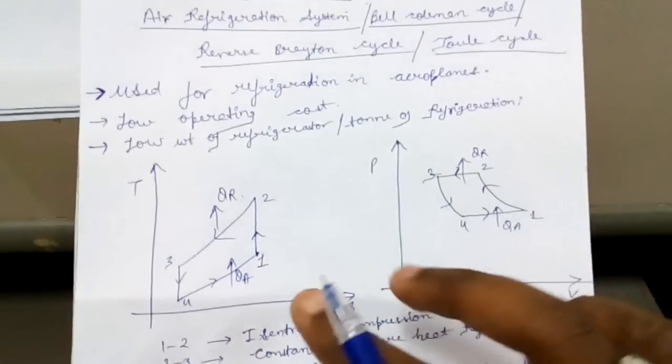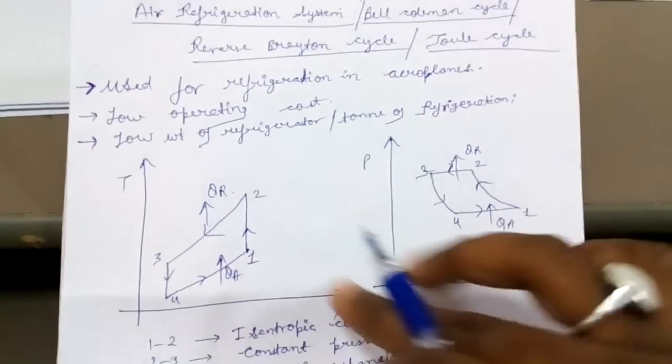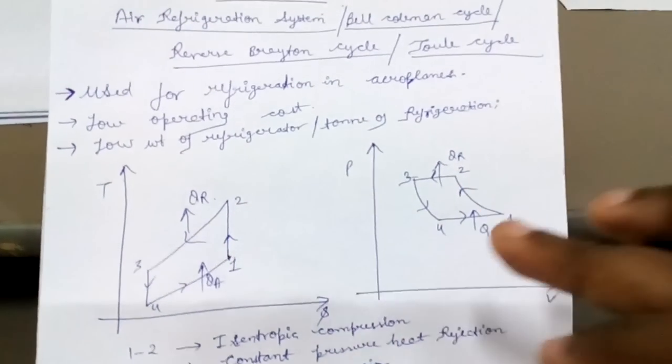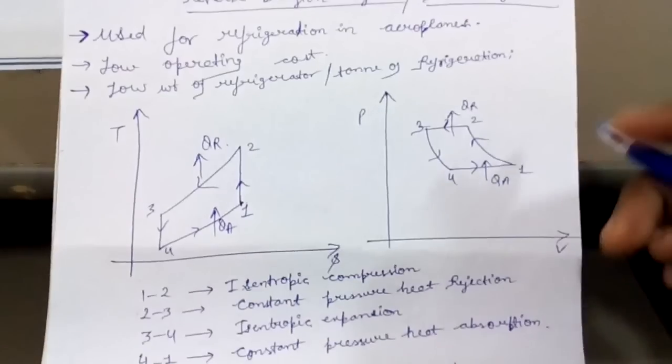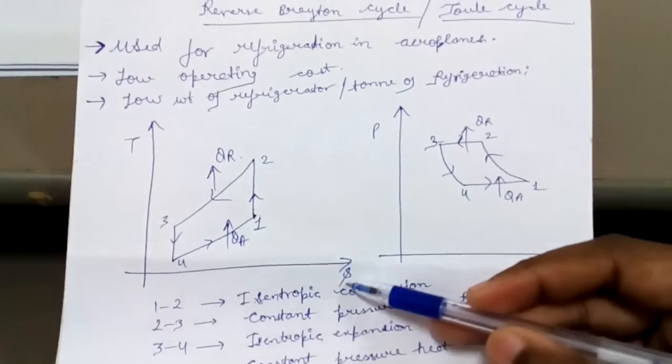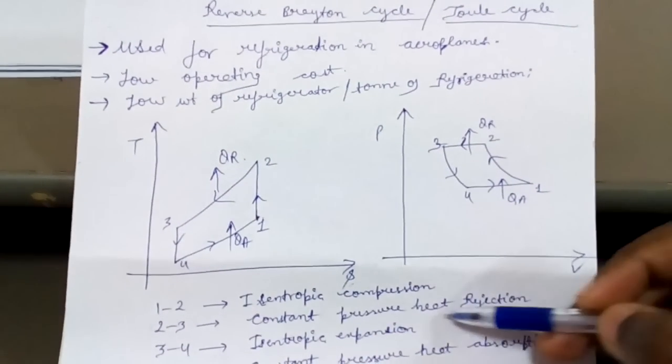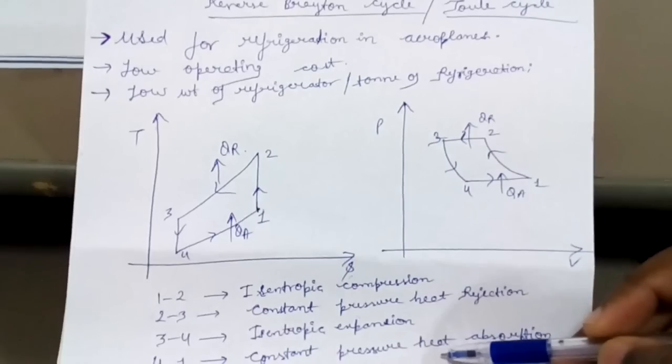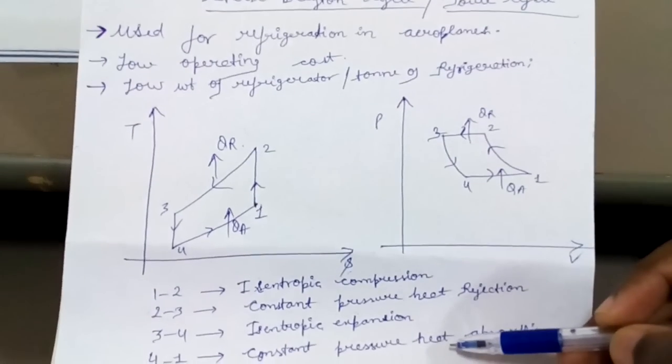So this is the basic TS diagram and PV diagram of air refrigeration system. From 1 to 2 it is isentropic compression. From 2 to 3 it is constant pressure heat rejection. From 3 to 4 isentropic expansion and from 4 to 1 constant pressure heat absorption.